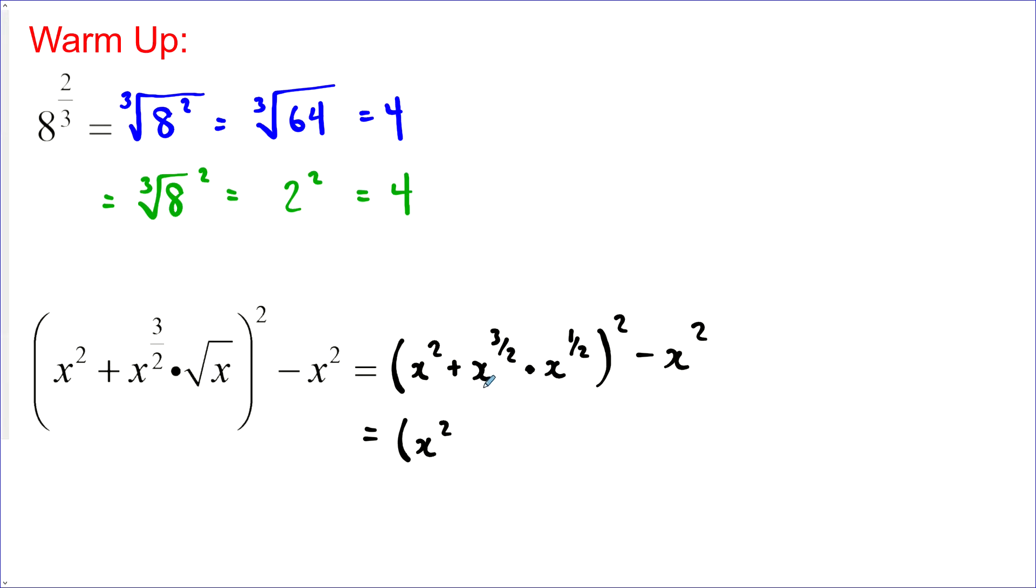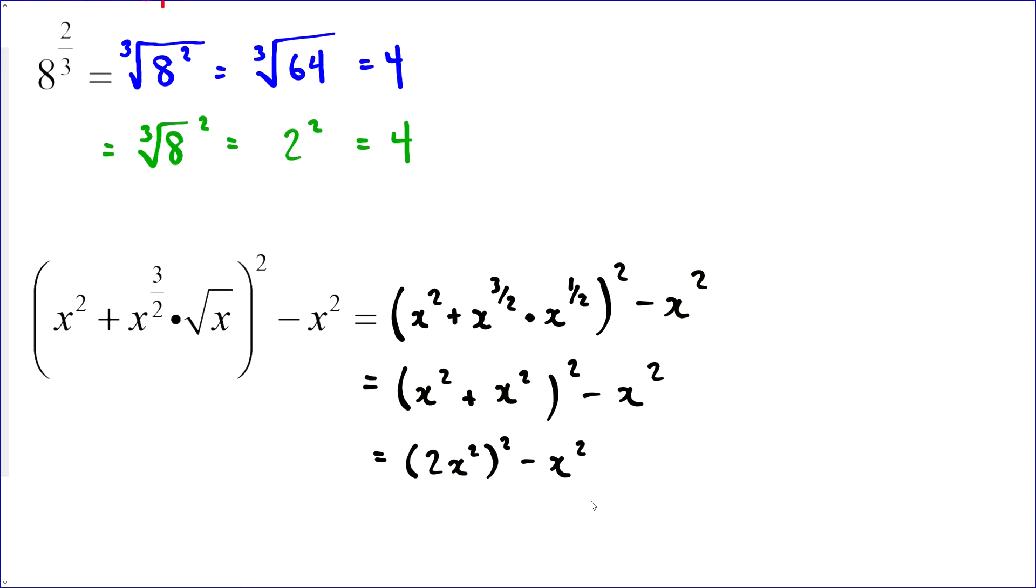So, I've got x squared, and that's all squared minus x squared, and x squared plus x squared is 2x squared. And when we have something in brackets and it's all squared, we need to square both. So, a common mistake I see is students forgetting to square this one. So, this would be 4x to the power of 4 minus x squared.